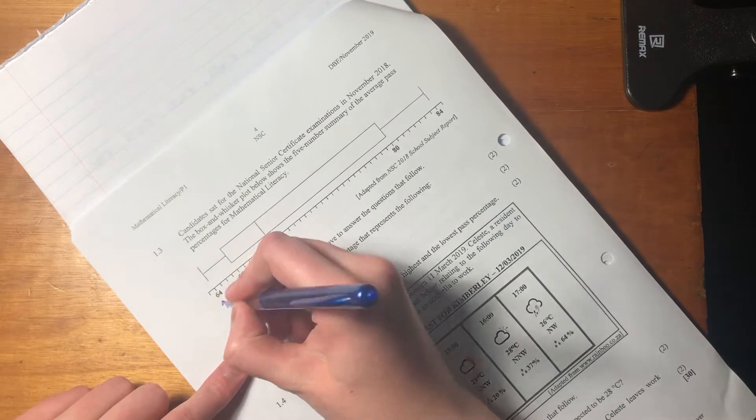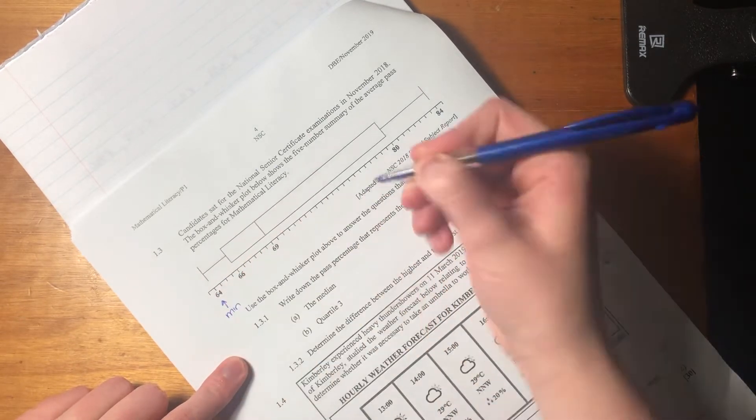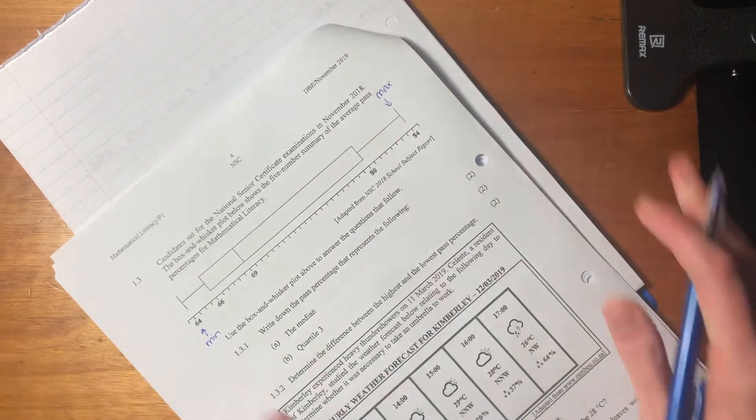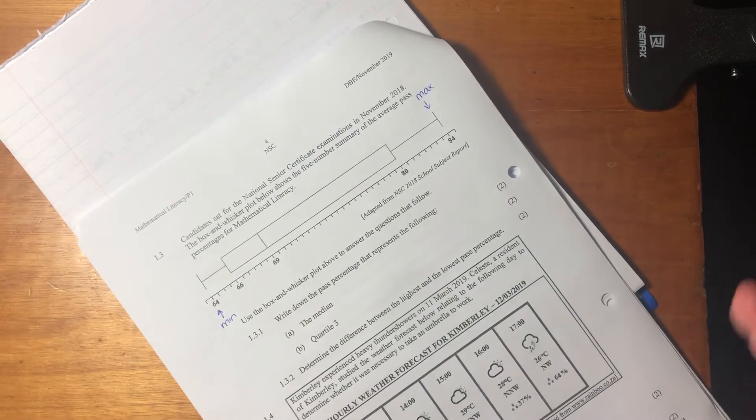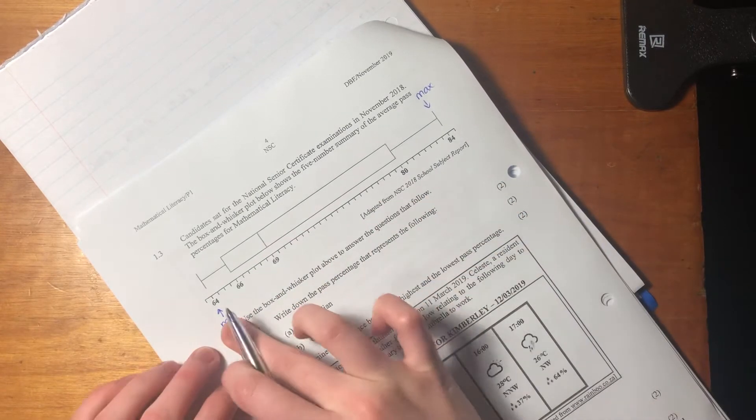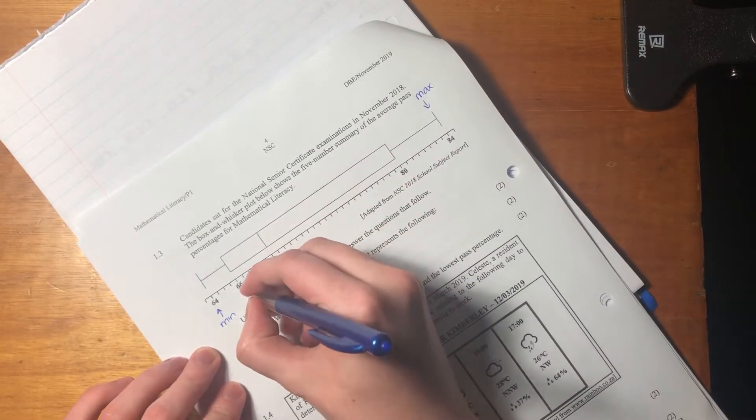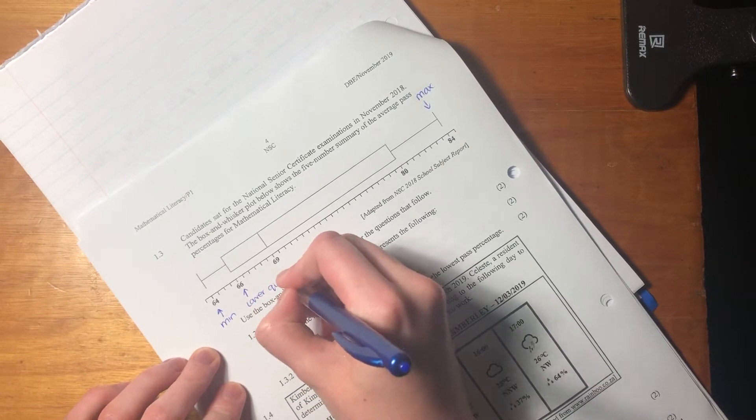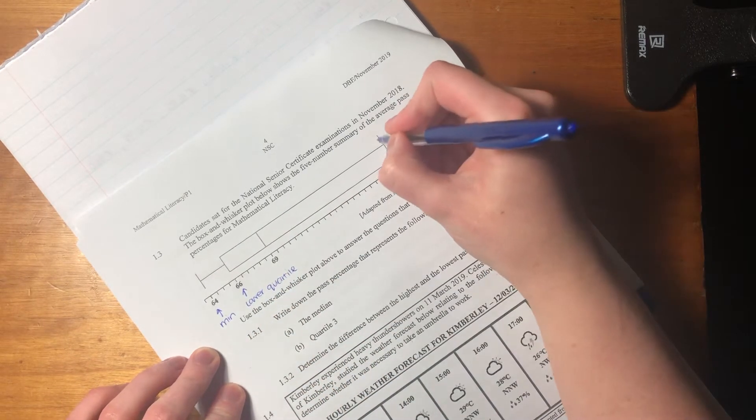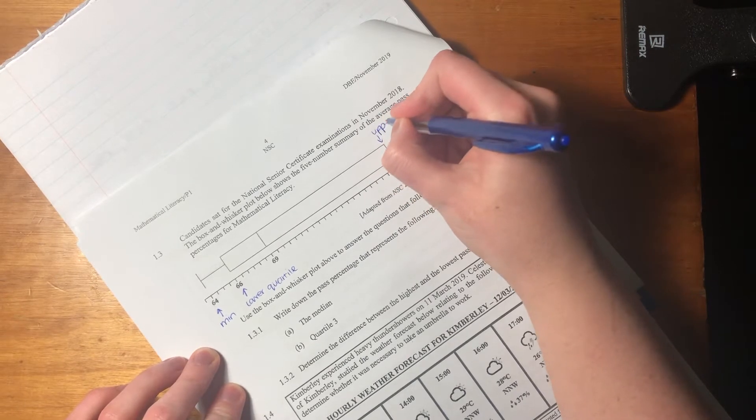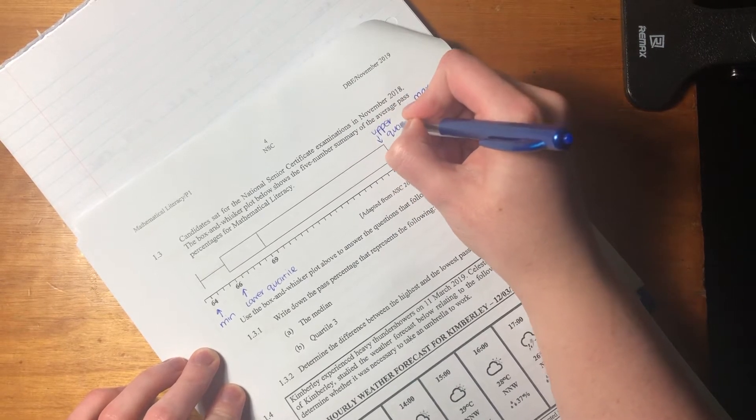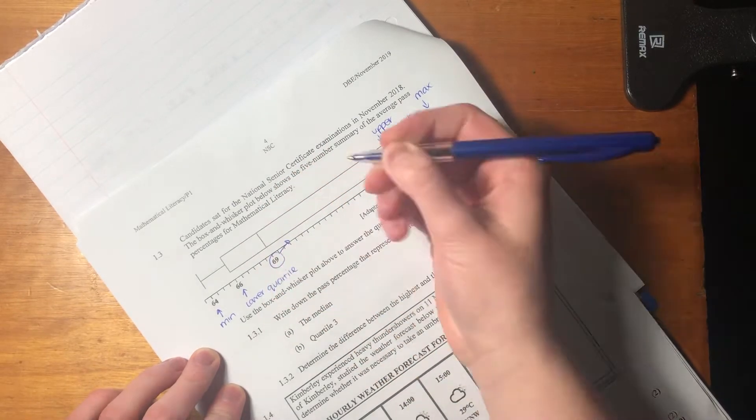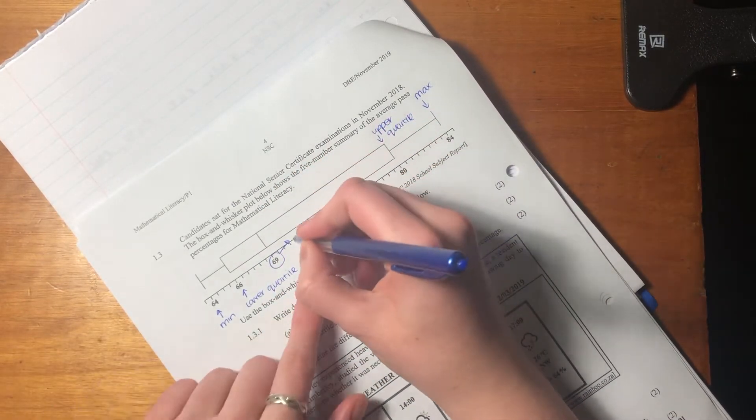So this one here is the minimum, and this is not something that I can really explain to you because this is literally just a set of rules. You need to learn these rules. So this is the minimum. That's the maximum. This is what we call the lower quartile. This 80% is what we call the upper quartile.